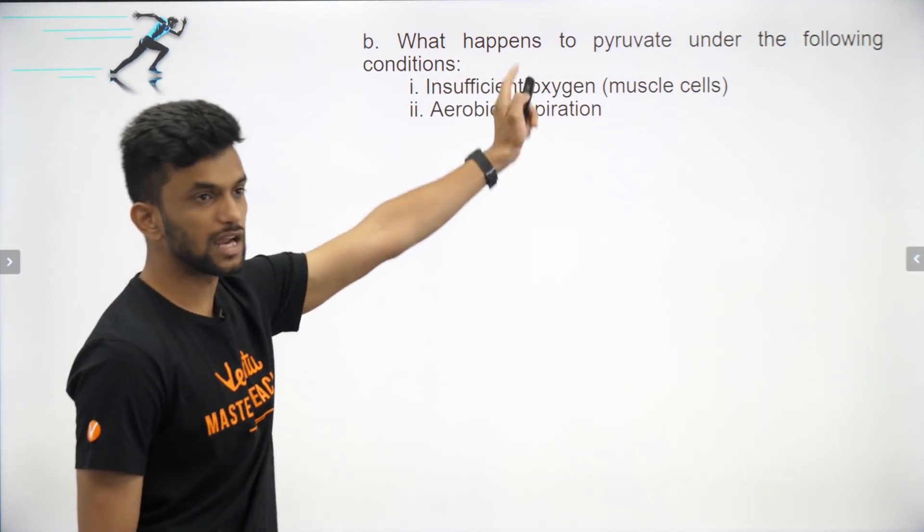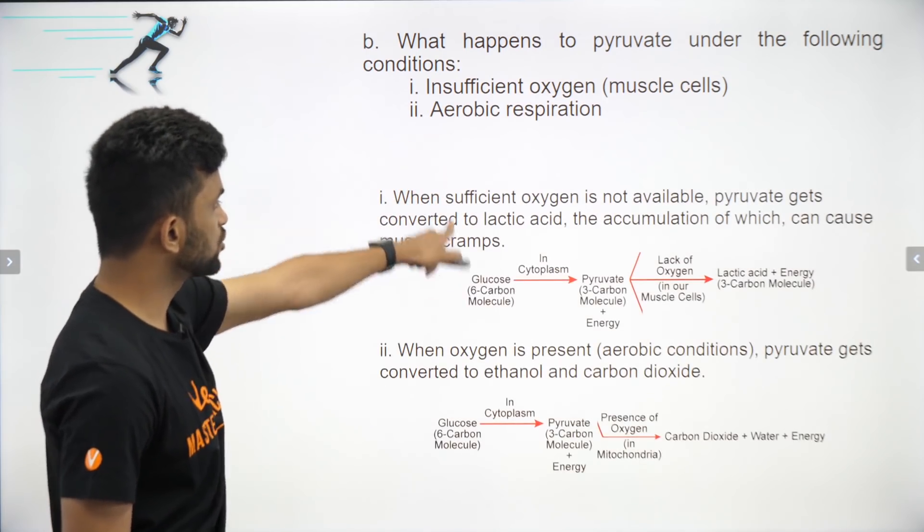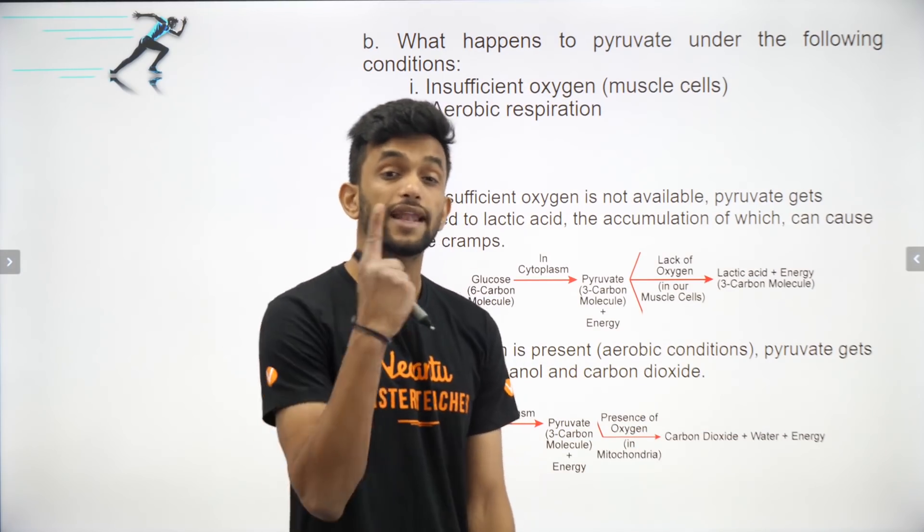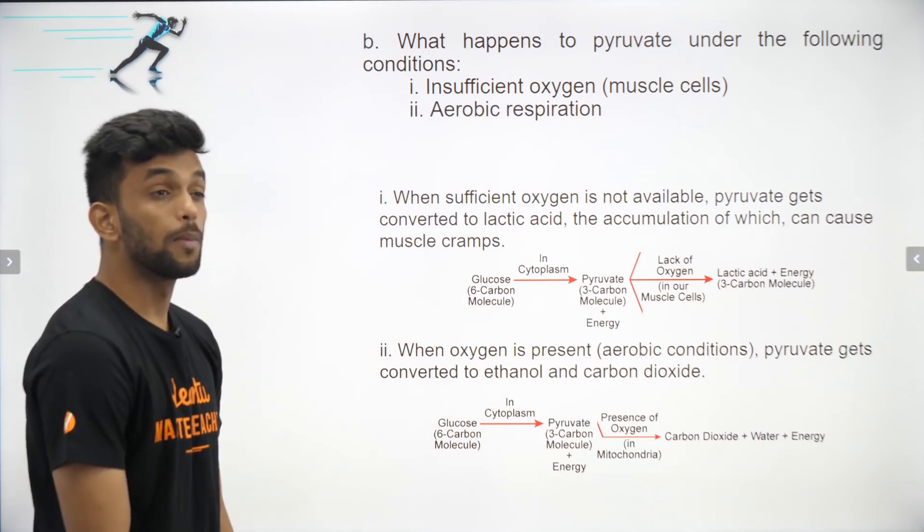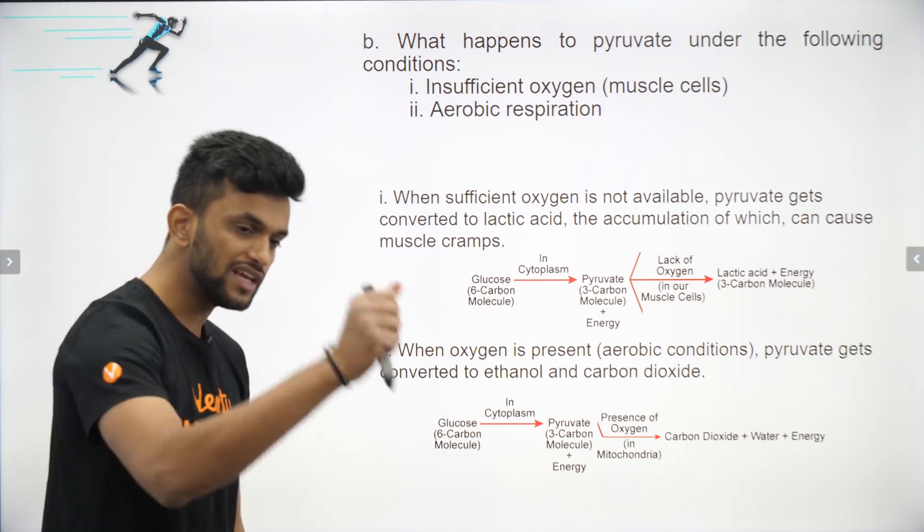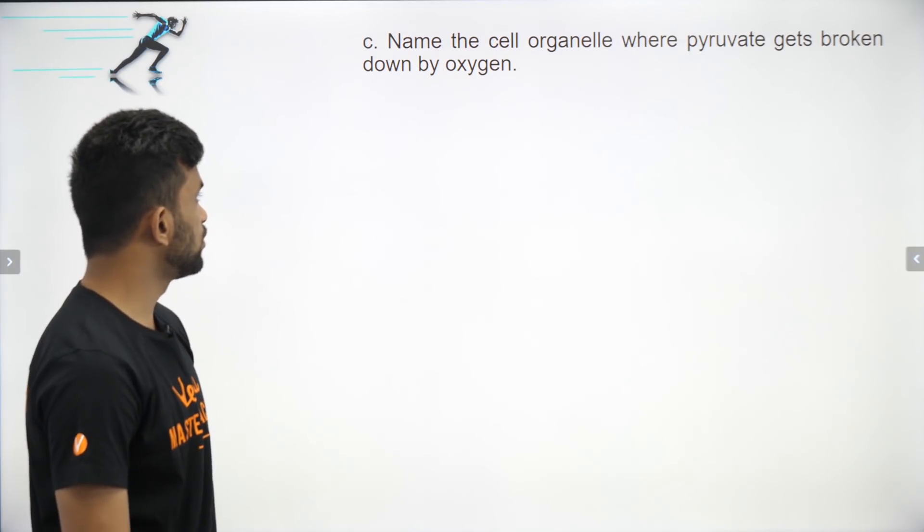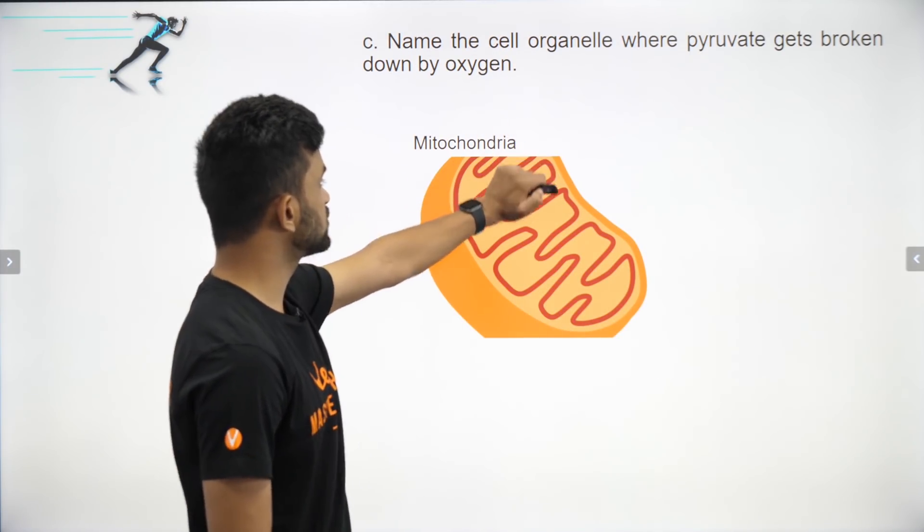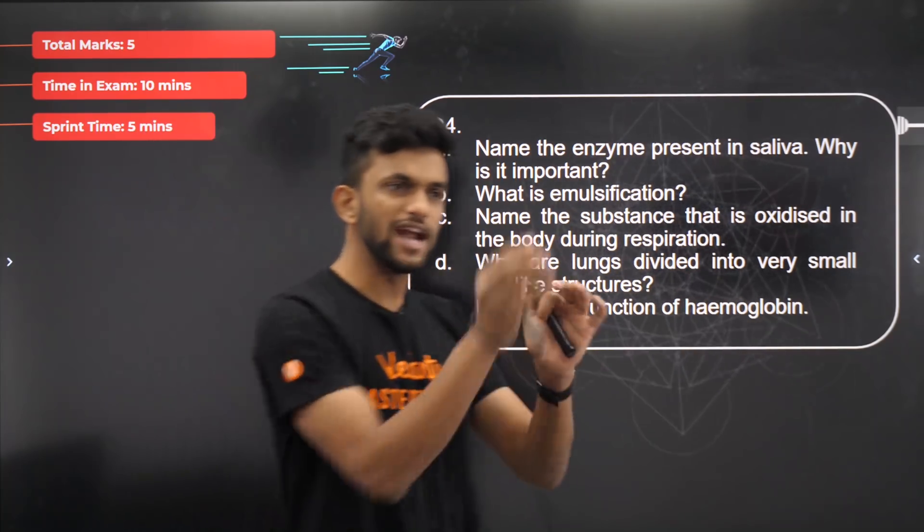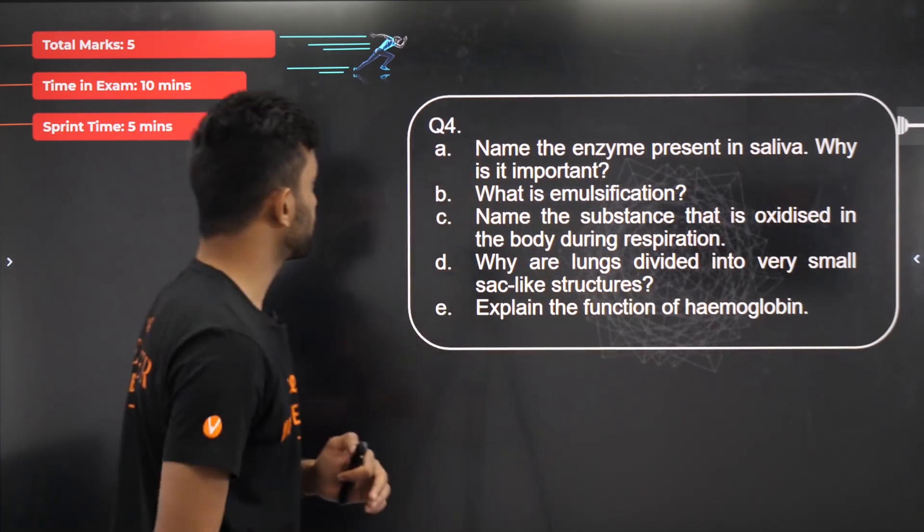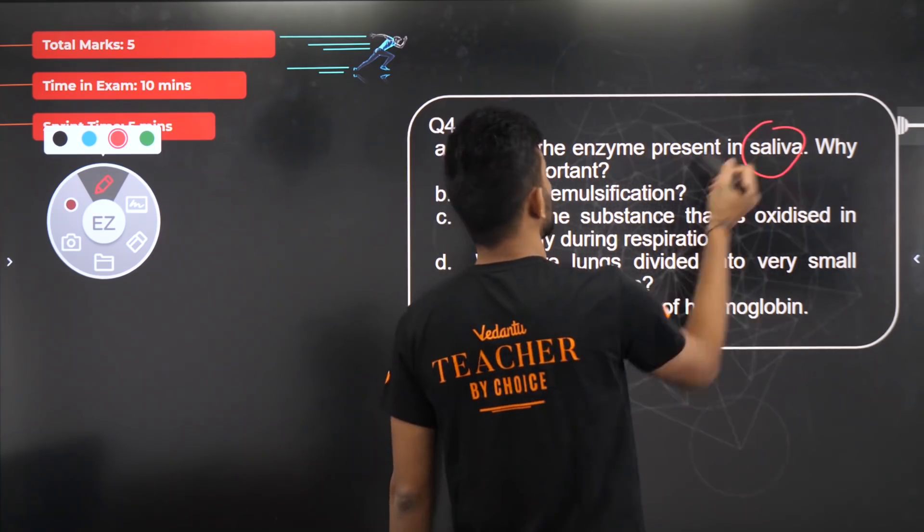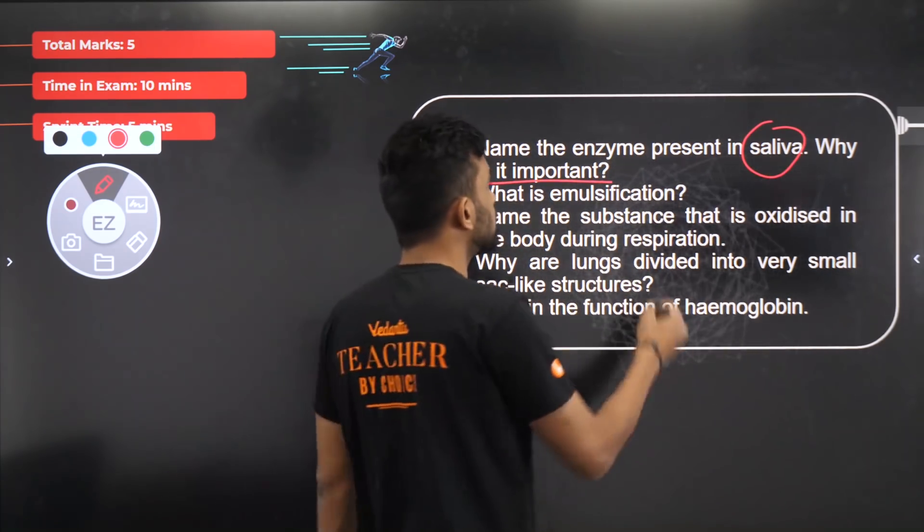In the cytoplasm, glucose converts to pyruvate. When there is insufficient oxygen, lactic acid and energy are formed. When there is sufficient oxygen, carbon dioxide, water, and energy. In case of yeast, we add yeast to the dough. Why? Tell me in the comment box. Pyruvate further breaks down in mitochondria. Next question: name the enzyme present in saliva and why is it important? Salivary amylase is used for breaking carbohydrates.